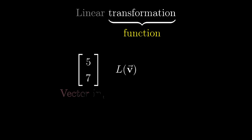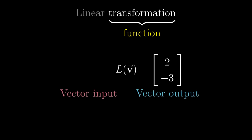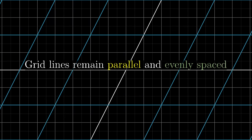Technically speaking, linear transformations are functions with vectors as inputs and vectors as outputs, but I showed last time how we can think about them visually as smooshing around space in such a way that grid lines stay parallel and evenly spaced, and so that the origin remains fixed.